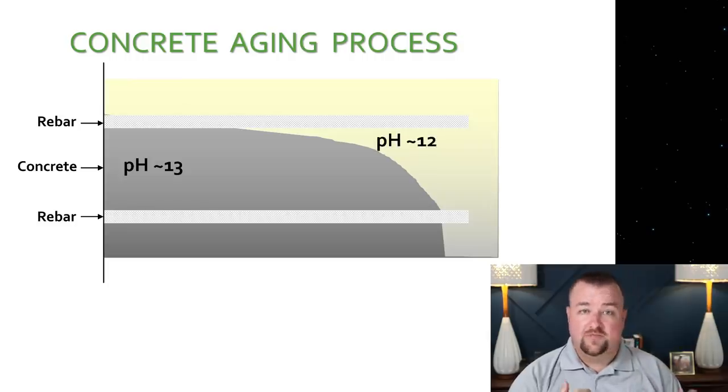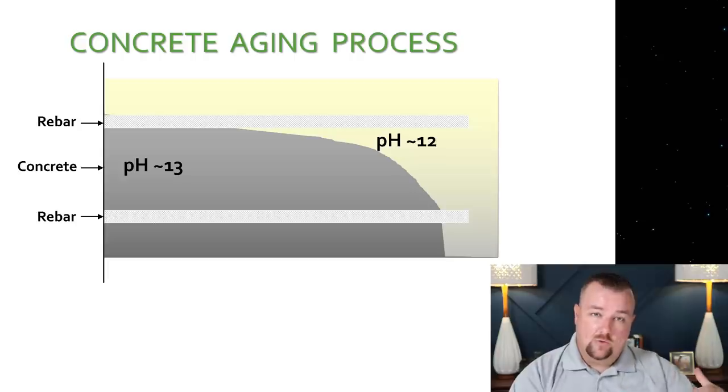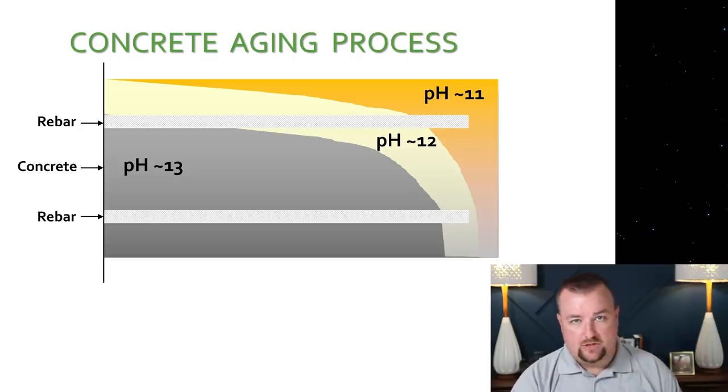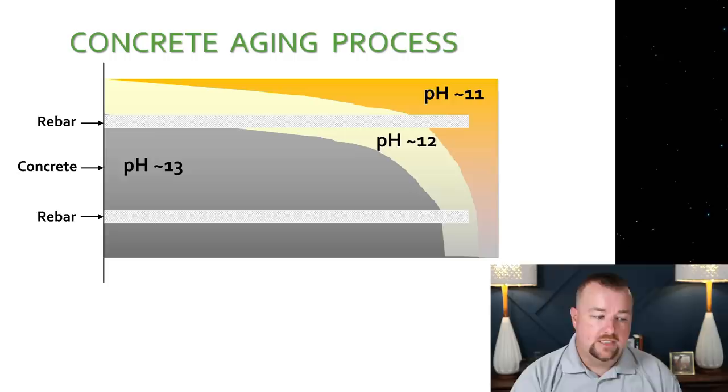Now, over time, 5, 10, 12 years, it all depends on how good the concrete is and how well it's mixed, but that acidity will push into the concrete deeper. And then the outer layers will become even more acidic. So you can see here in our diagram, now the outer layers have a pH of approximately 11. The pH of 12 has pushed in deeper, but the rest of the concrete below is still a pH of 13. Now remember, steel in order to rust needs oxygen, water, and a pH environment less than 10. So we're still good. No rusting has occurred.